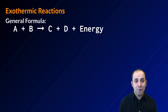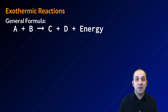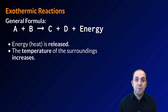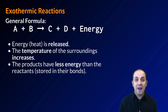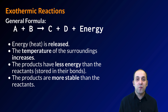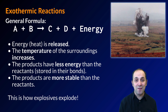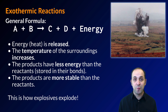Exothermic reactions have a different general formula: in the general formula for an exothermic reaction, energy is on the product side. As a result, energy is released, which means the temperature of our surroundings increases. The products have less energy stored in their bonds than the reactants did, making the products more stable than the reactants. This is of course what happens when an explosive explodes — you can see the evidence that a tremendous amount of energy was released during the detonation.